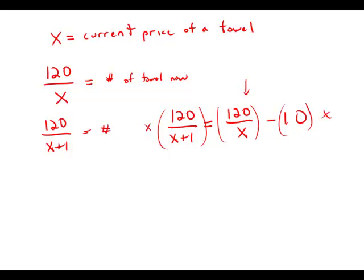And what I get is 120x over x plus 1. The x's cancel, so I just get 120 minus 10x.